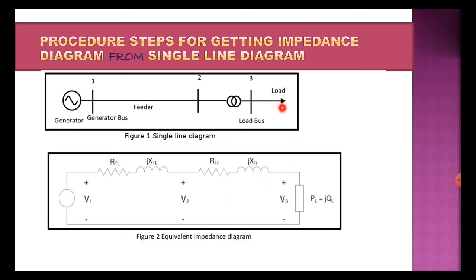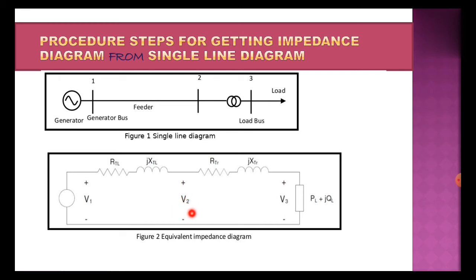The load is represented as P_L plus jQ_L, where P_L represents the active power at the load and Q_L represents the reactive power at the load. Observing the voltage points in this equivalent impedance diagram: V1 is the generated voltage supplied to the circuit. In between, there is bus 2, so the voltage is represented as V2. At bus 3, which is the load bus, the voltage is represented as V3.